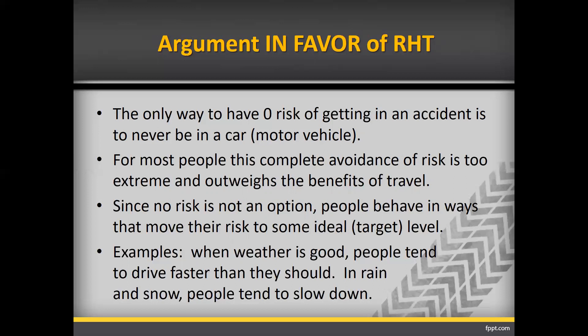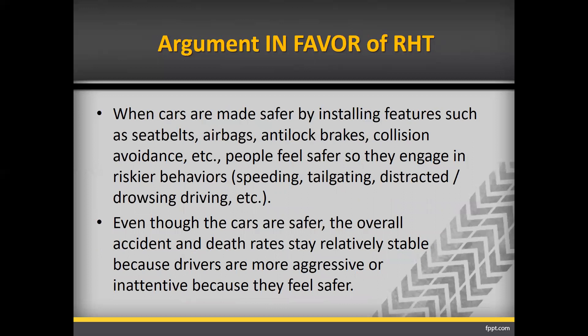For example, when weather is good, people tend to drive faster than they should, and in rain and snow, people tend to slow down. A major component of RHT is that when we make cars safer by installing features such as seat belts, airbags, anti-lock brakes, and collision avoidance, people feel safer and engage in riskier behaviors such as speeding, following too closely, distracted driving, and drowsy driving. Even though the cars are safer, the overall accident and death rates stay relatively stable because drivers are more aggressive or inattentive since they feel safer.